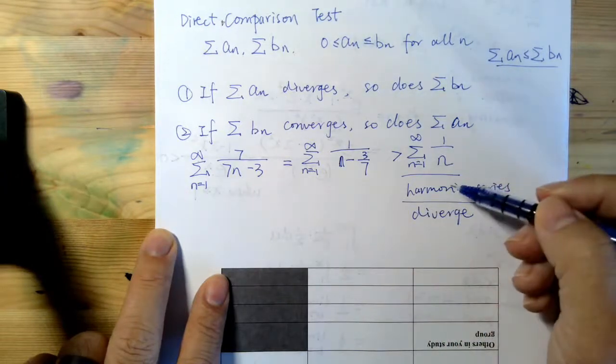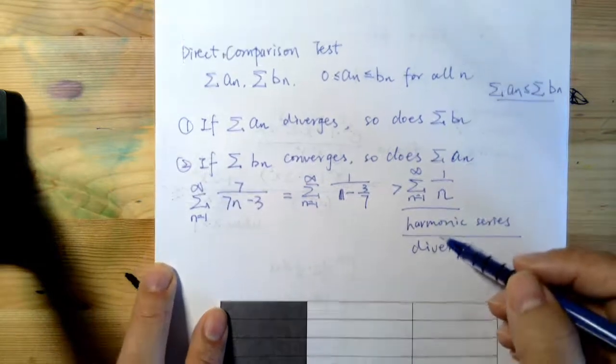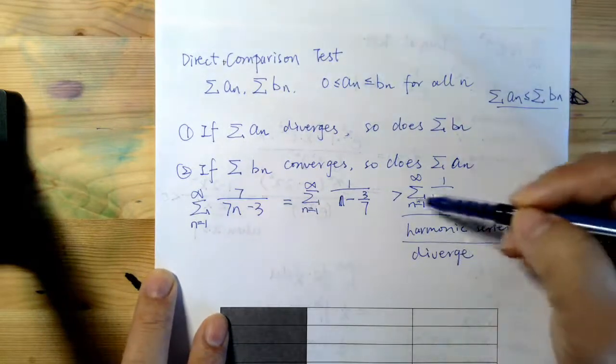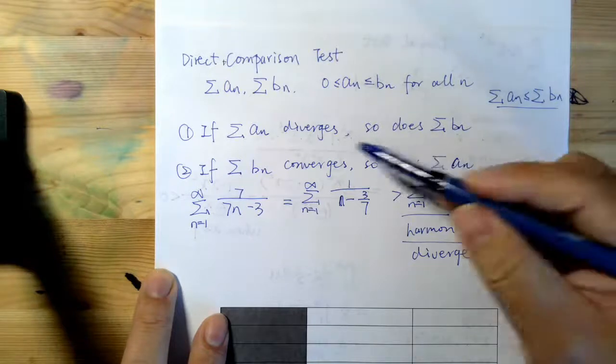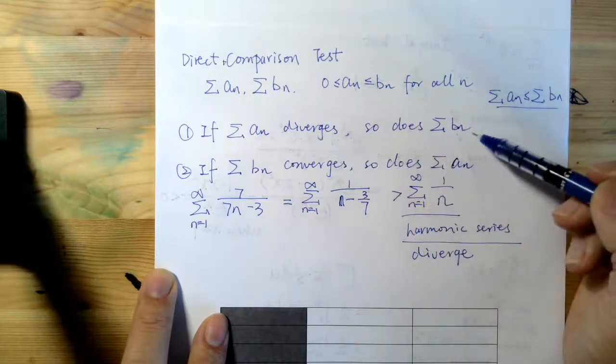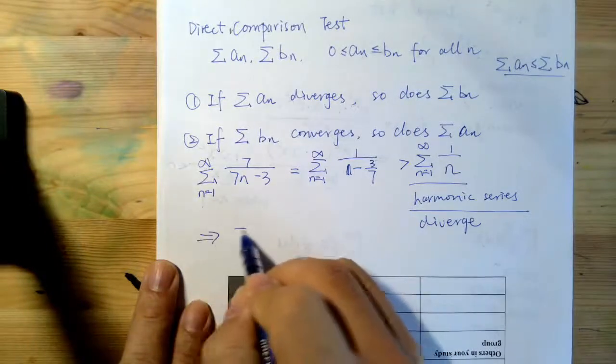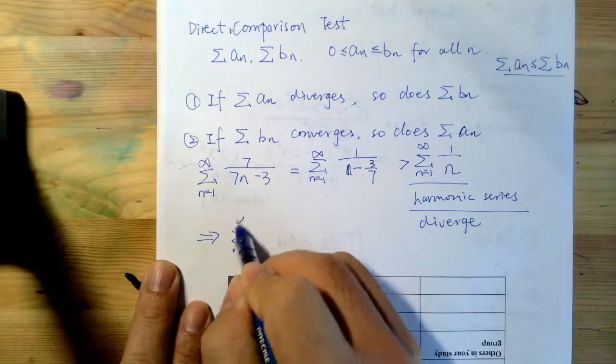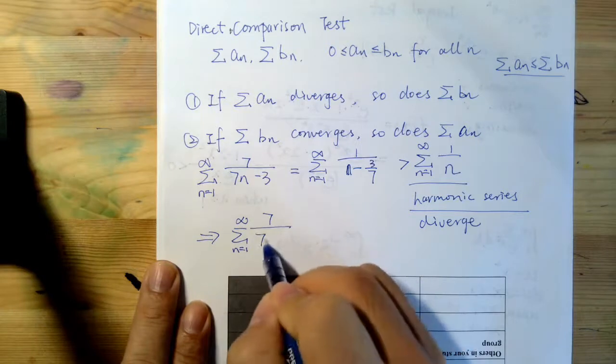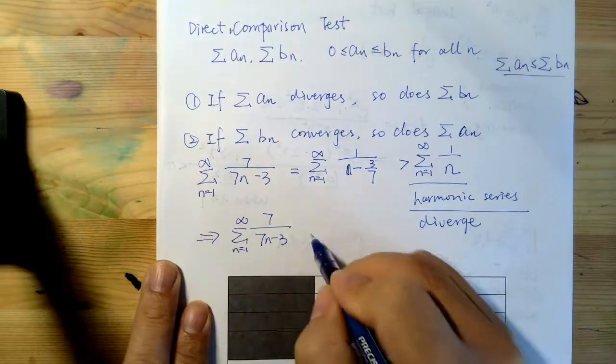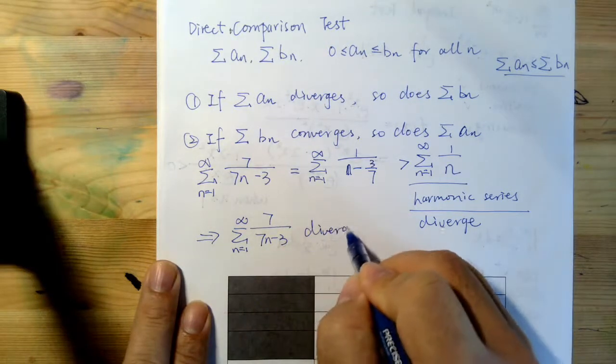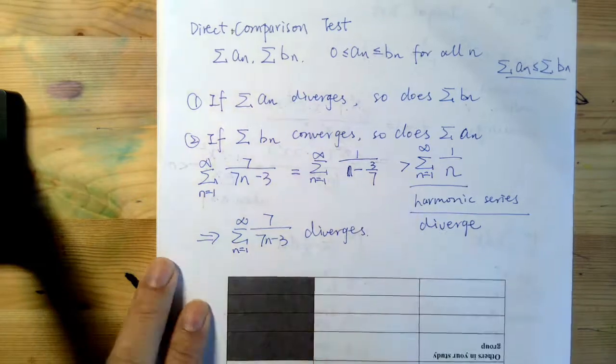So, based on the direct comparison test, if the smaller one diverges, so does the larger one. So, we can get that the series, 7 over 7n minus 3, also diverges.